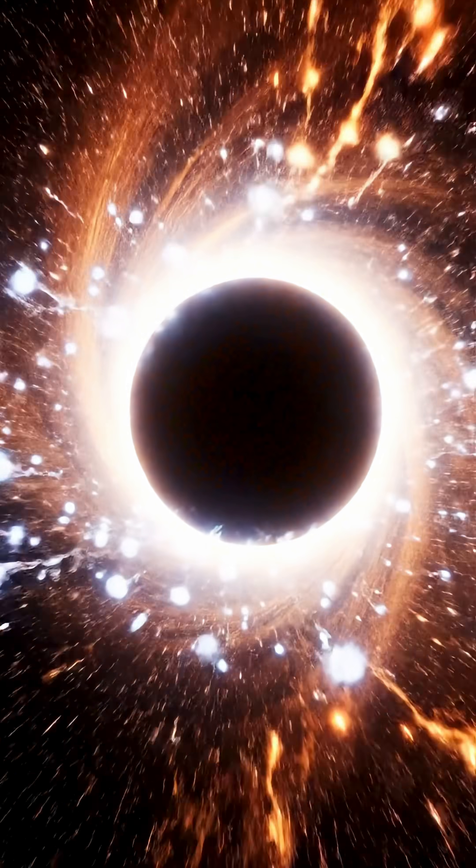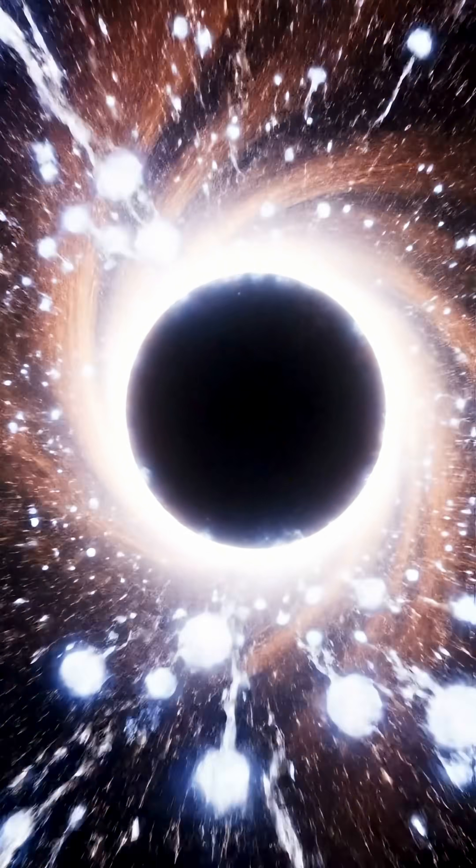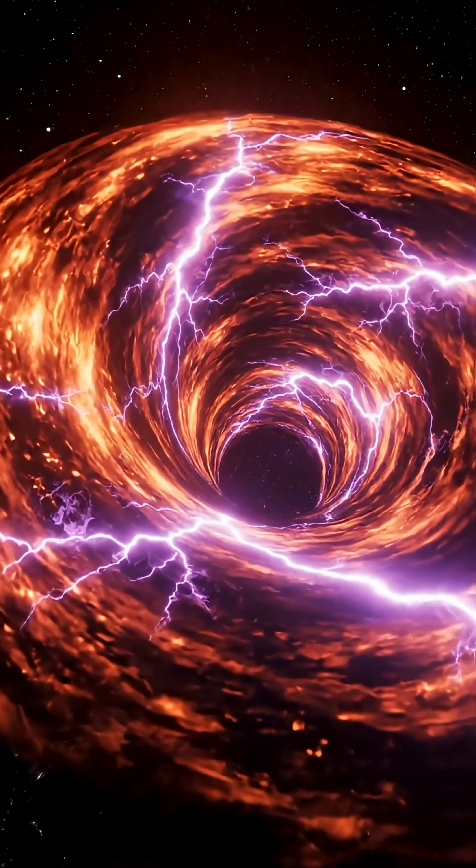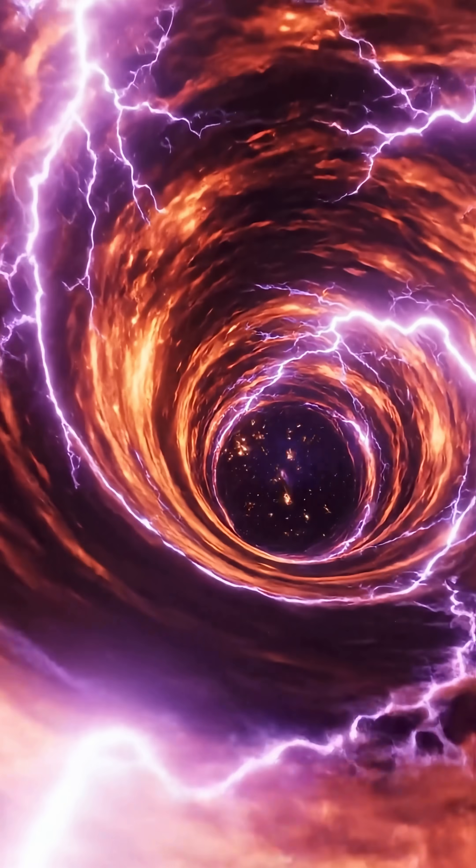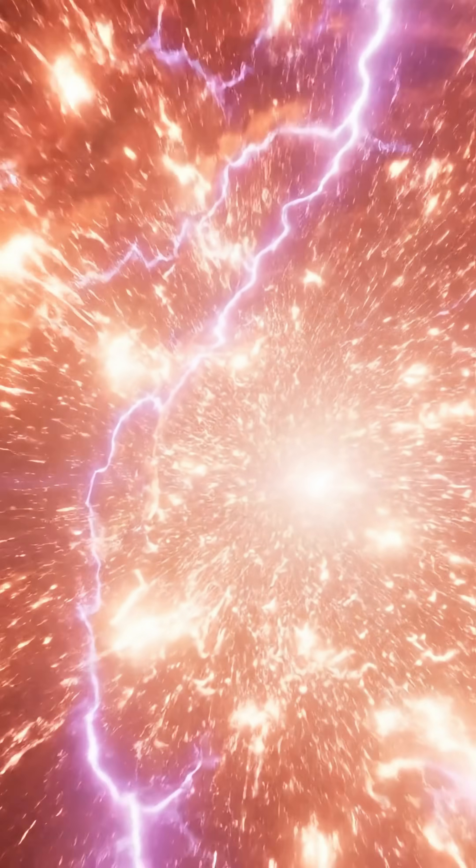According to their calculations, as a black hole evaporates and reaches the halfway mark known as the page time, the structure of space-time changes. The curvature itself sharpens into a mathematical spike right at the event horizon.